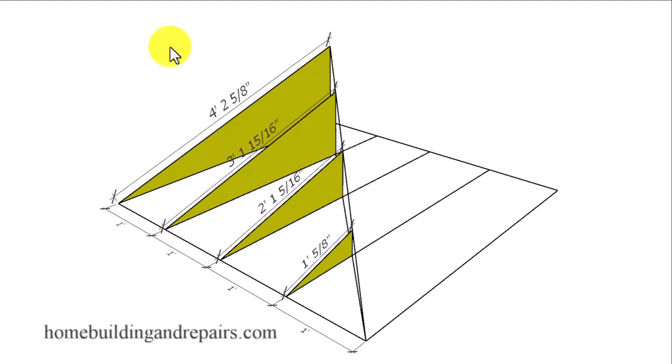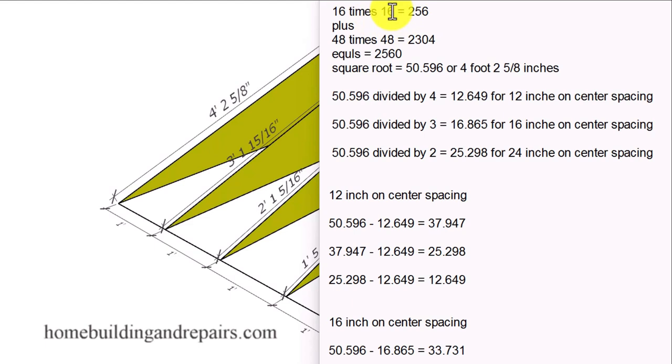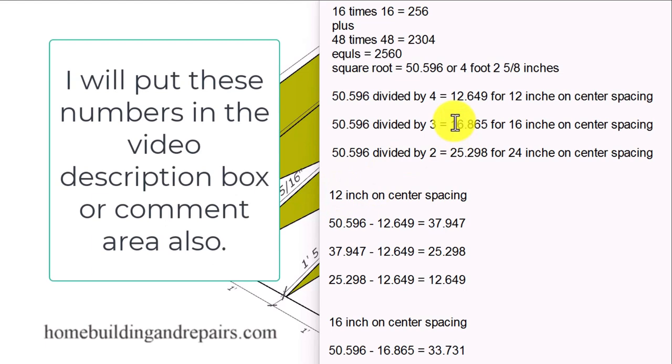And even though I won't be walking you through the Pythagorean Theorem, this is actually what it's going to be and how we arrived at this particular number. And this will be the length we're going to be working with in all three of our examples. Because all three of these numbers, the number 12, the number 16, and the number 24, each divide into four foot, providing us with a common denominator.